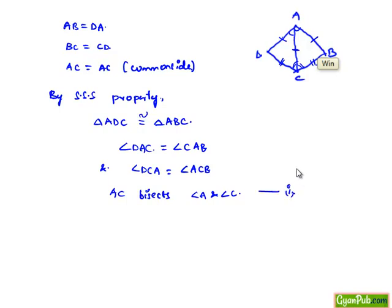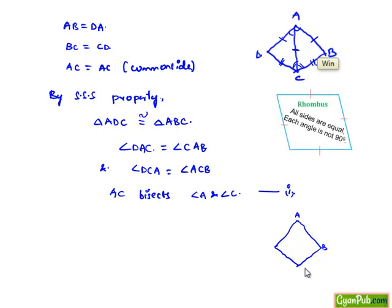In order to prove the second proof, that BD bisects angle B and angle D respectively, let us consider the same rhombus ABCD, this time with BD as the diagonal.